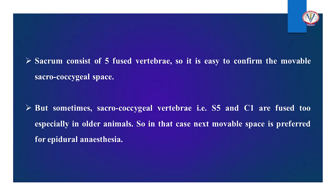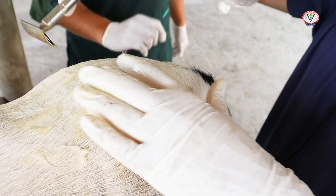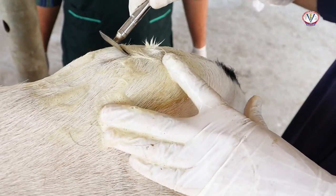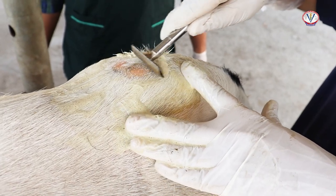Since the sacrum consists of five fused vertebrae, it is easy to confirm the movable sacrococcygeal space. However, sometimes sacrococcygeal vertebrae (S5 and C1) are fused, especially in older animals, so in that case the next movable space is preferred for epidural anesthesia. The site in the dorsal midline is then clipped and aseptically prepared using a disinfectant solution.